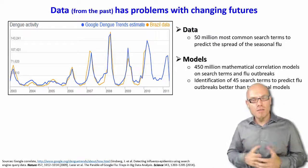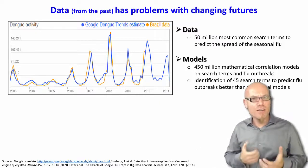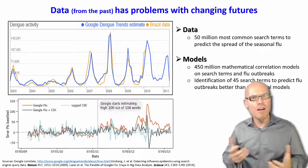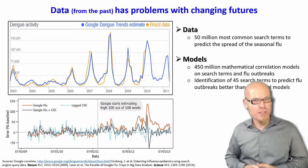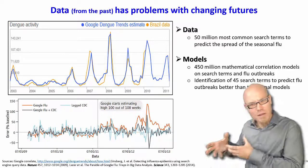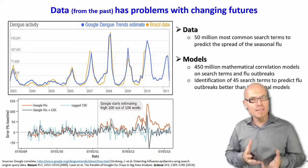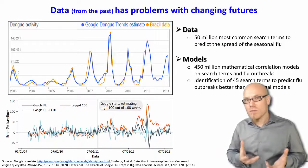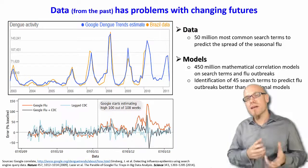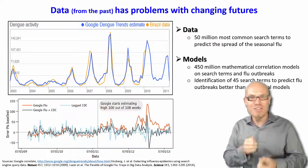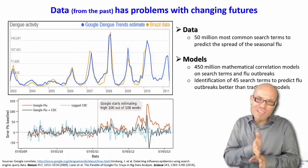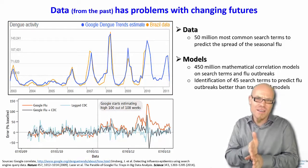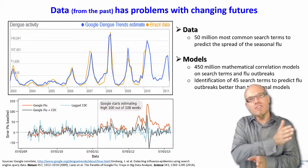When they ran the same model several years later, they found it no longer worked — it couldn't make predictions as well anymore. What happened is that reality changed. The model was trained on data from years earlier, and people's search behavior had shifted, so the model failed. The best you can do is constantly adjust your predictive model as reality changes, staying as close to the present as possible — but you cannot make predictions into a genuinely changing future.